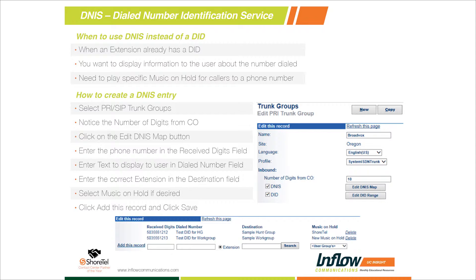The other use for DNIS is when a call comes in and we want to route it to a destination, but maybe we want to display a name or what type of phone number the person called in on. Using DNIS, we can display a dialed number field as a text field on the ShoreTel phones and in the software. So we can tell the user that this call came in on our 800 number listed on Google. Or if we have a number forwarded from one office to another because an office is closed for remodeling, we can display that using a dialed number tag against the DNIS.